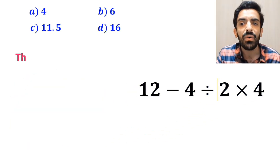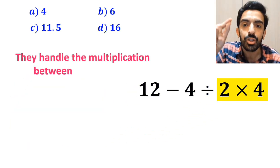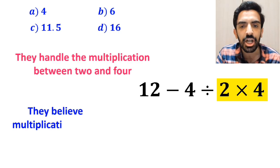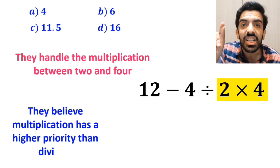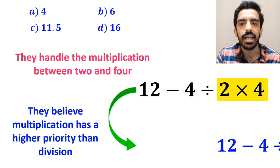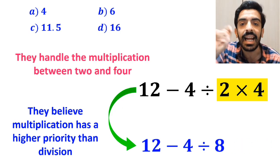In the next step, first they handle the multiplication between 2 and 4 because they believe multiplication has a higher priority than division. So they rewrite this expression as 12 minus 4 divided by 8.